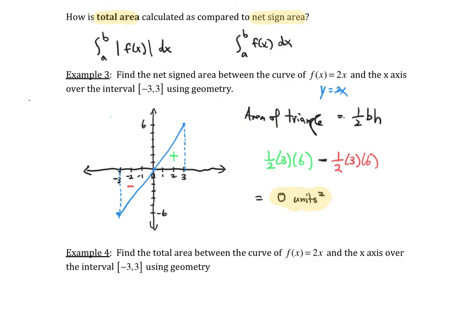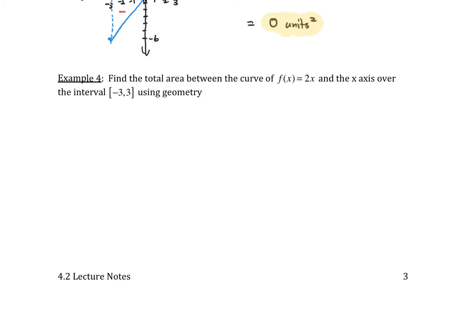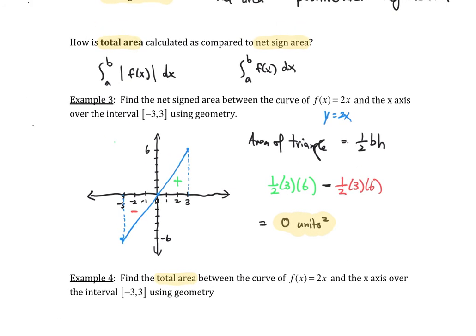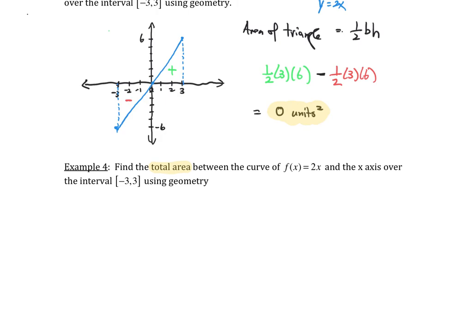Now let's take a look at Example 4. This time we're not looking for the net area, we're looking for the total area. Before, we were looking at the net signed area. This picture corresponds to the integral from negative 3 to 3 of 2x dx. When I want to find the total area, I integrate from negative 3 to 3 of the absolute value of 2x dx.